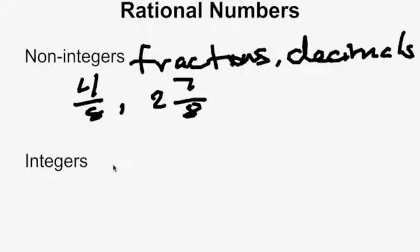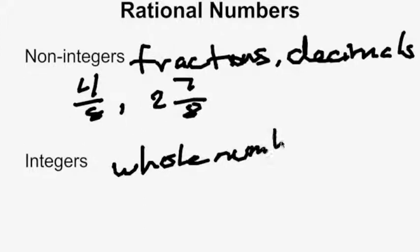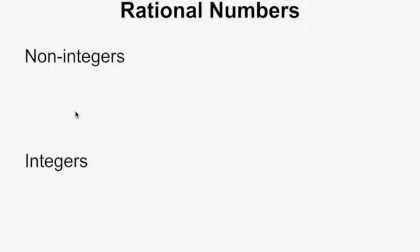Integers, however, are the whole numbers and their opposites. So you have numbers such as 9 and negative 100. So all of the whole numbers do not include fractions or decimals.